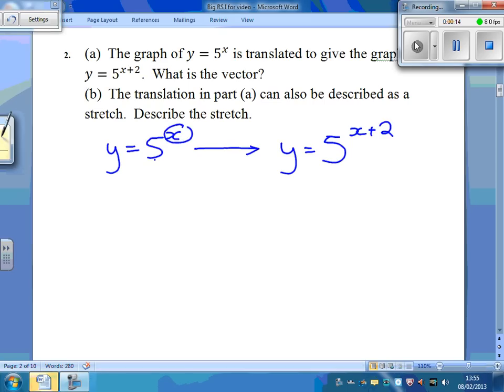The y's not changed, but the x has changed to an x add 2, and so that means we've had a translation, and it's gone 2 to the left, so it's got minus 2, 0.